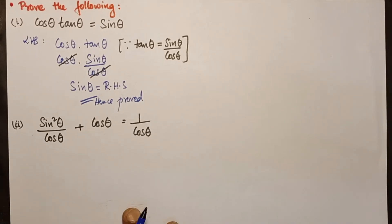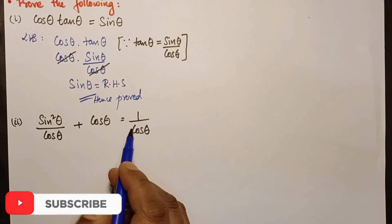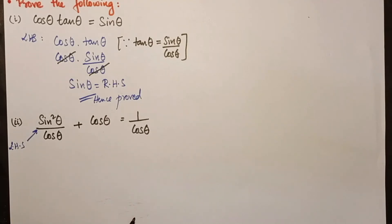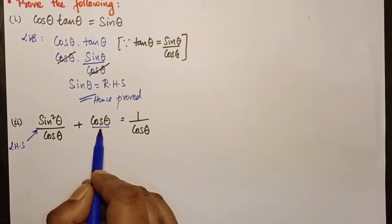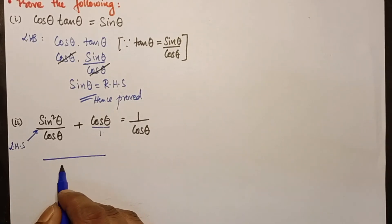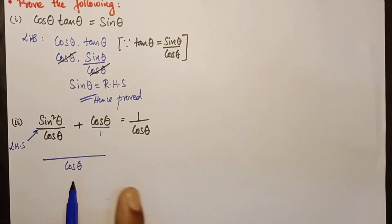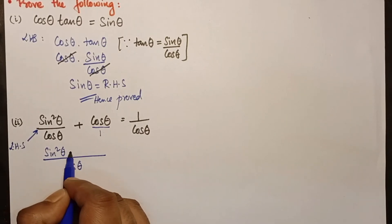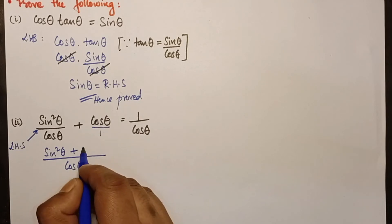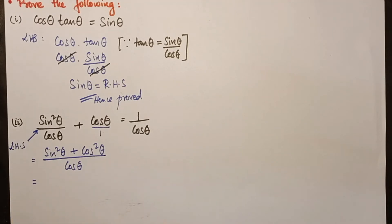Next question: prove that sin²θ/cosθ + cosθ = 1/cosθ. Taking the left-hand side, there is a fraction so we take the LCM of cosθ and 1, which is cosθ. Dividing: cosθ/cosθ = 1, so the numerator becomes sin²θ + cosθ · cosθ = sin²θ + cos²θ.